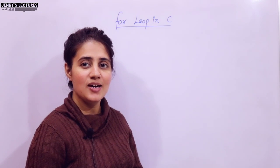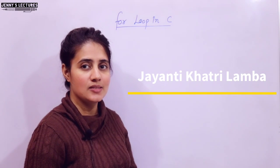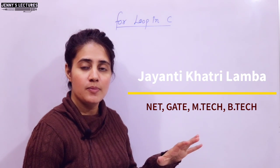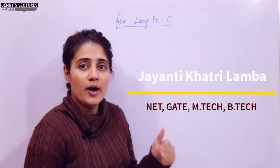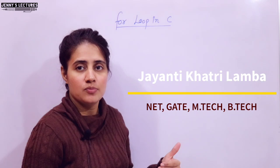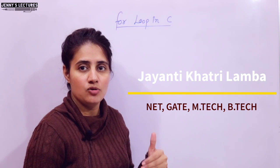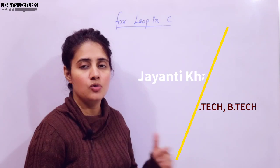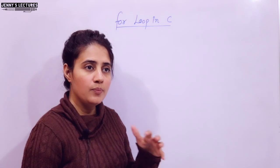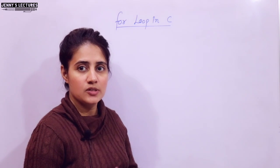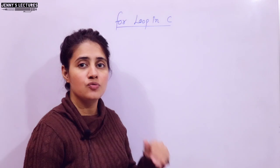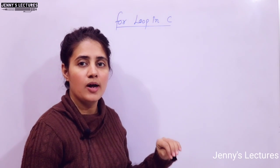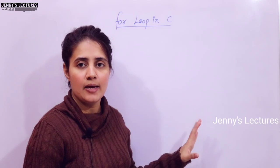In this series of learning programming in C, we are discussing looping statements in C. In the previous video I discussed some basic points about loops - why we write loops in a program, the need of looping statements, what are exit controlled loops, what are entry controlled loops. Now in this video I'll be talking about the for loop. Three types of loops are there: for, while, and do while. In this video I'll be talking about for loop in C in detail.